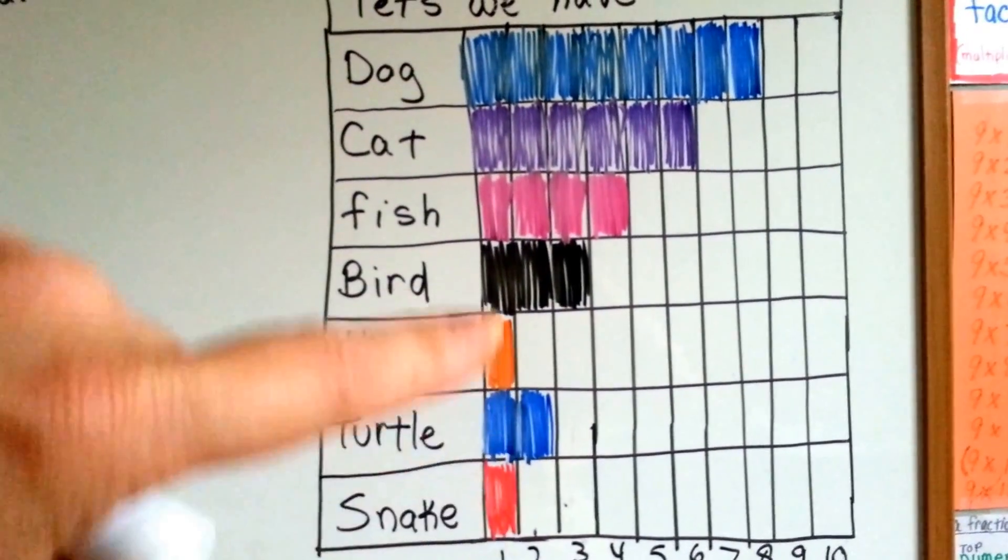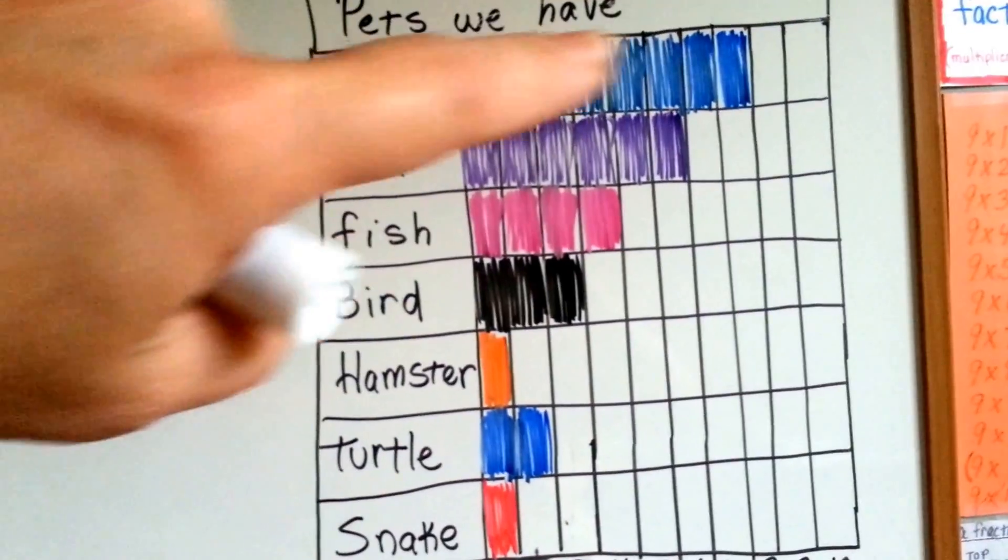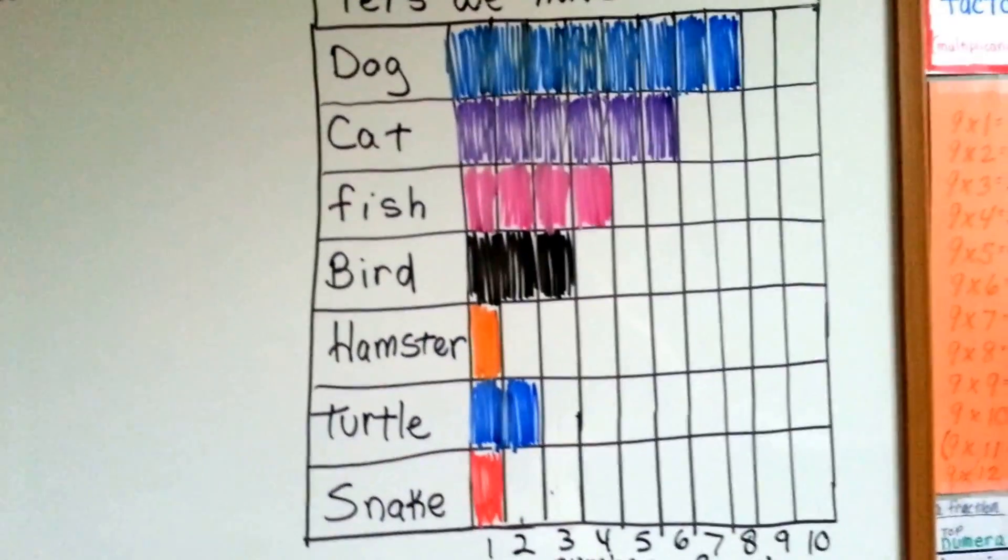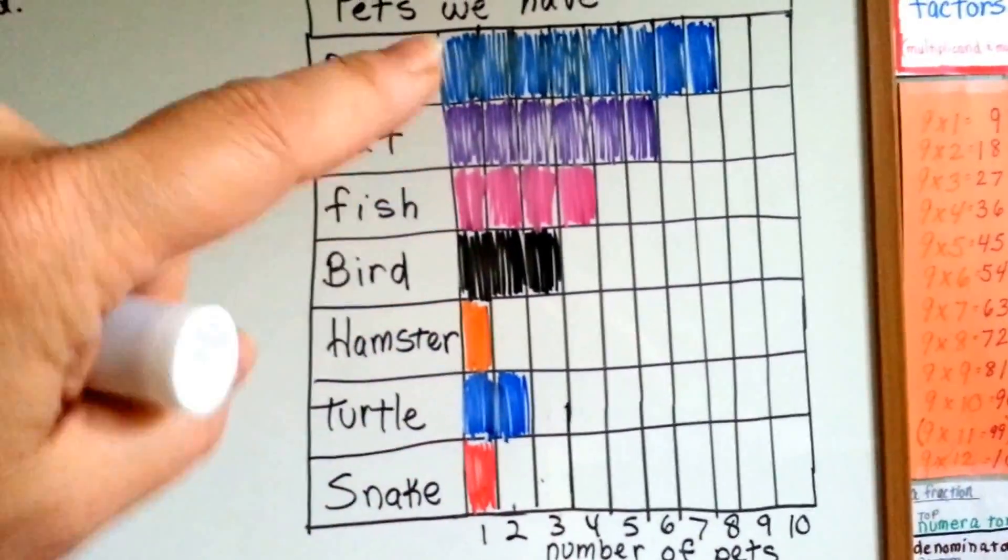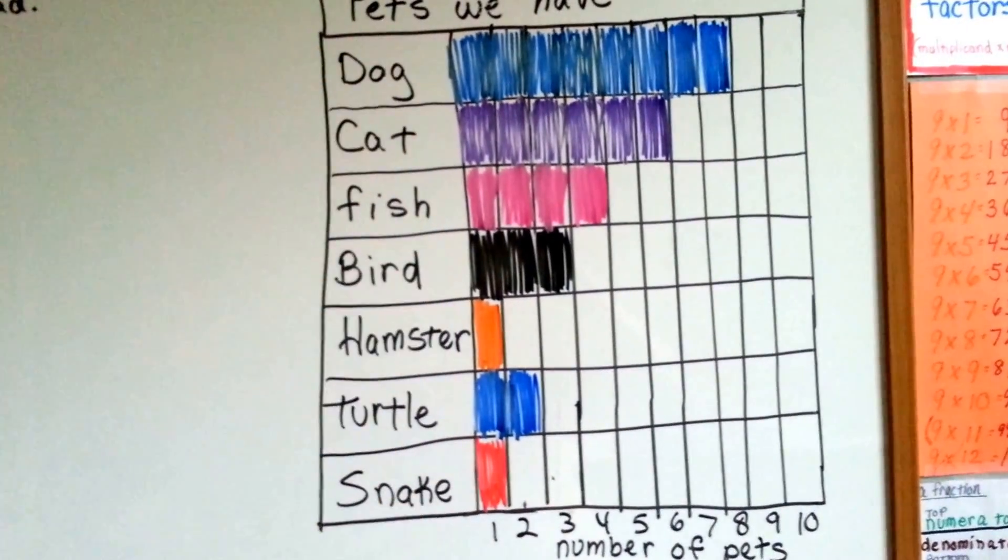One box is one student. And then it added up all the information so that we could very easily see which pets were the most popular or the least popular.